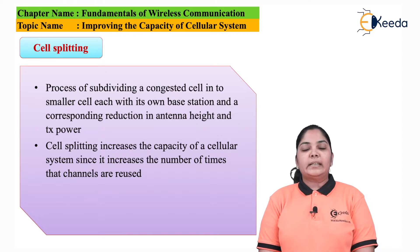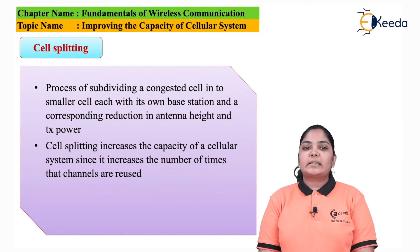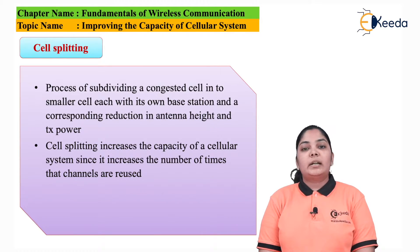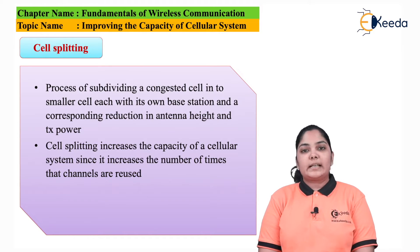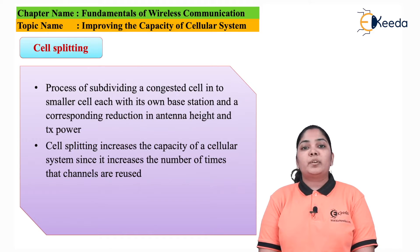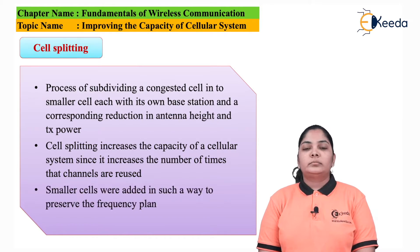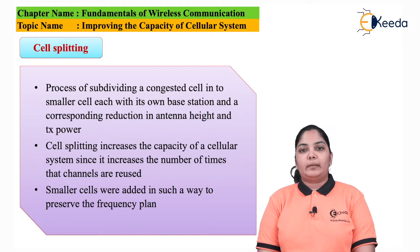Cell splitting increases the capacity of the cellular system since it increases the number of times that the channels are reused. As the number of clusters increase, the number of co-channel cells also increases, which means frequency reuse also increases. The smaller cells are added in such a way that we preserve the frequency reuse plan.